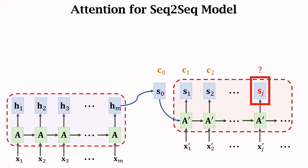Attention was originally developed for improving RNNs. But can we remove RNNs while keeping only attention? In the original attention paper, attention was built upon RNNs. But it turns out attention can work very well without RNNs. In fact, attention alone can beat RNNs. The basic idea of transformer is using attention without recurrence units. Let's design an attention layer and use it for sequence-to-sequence.